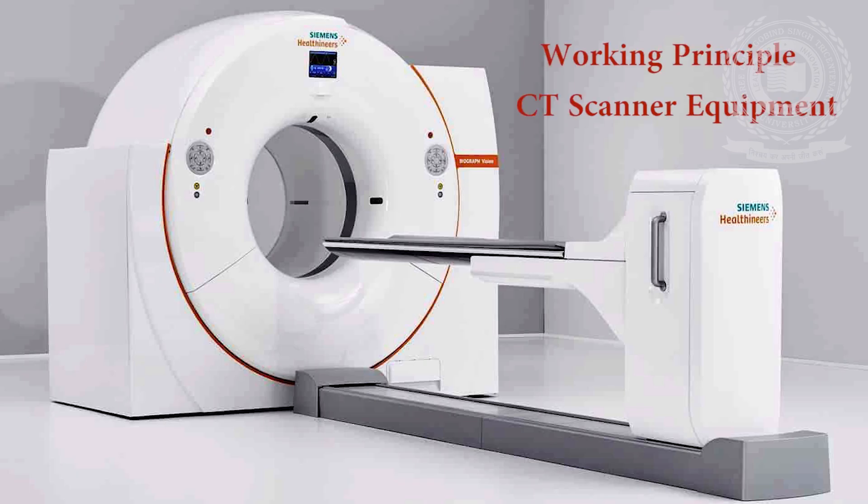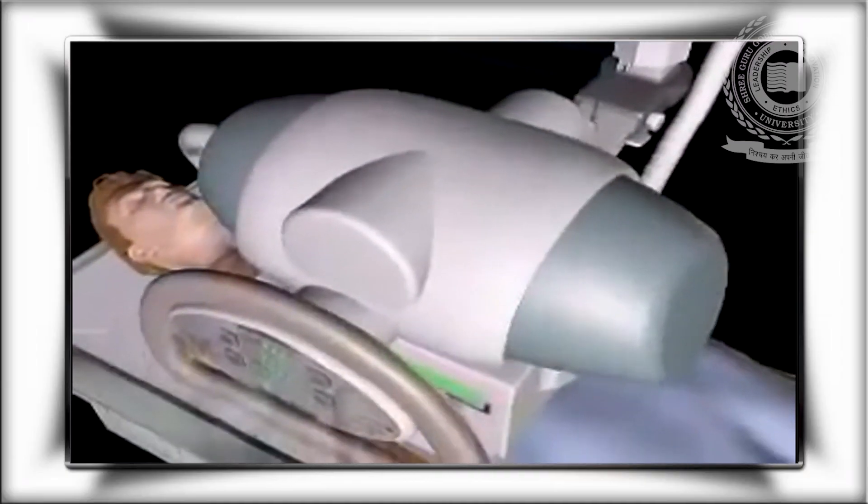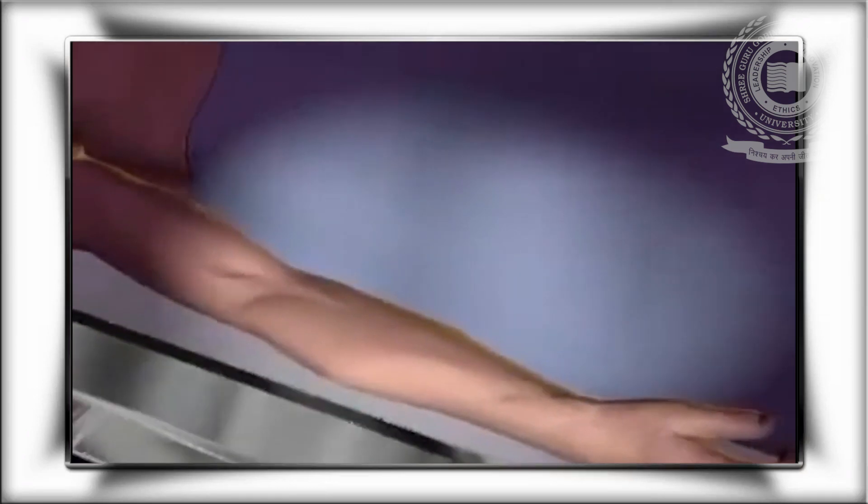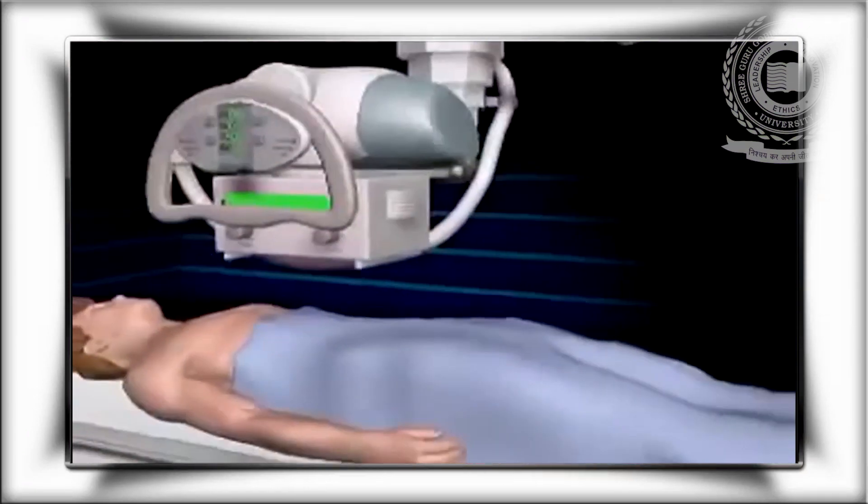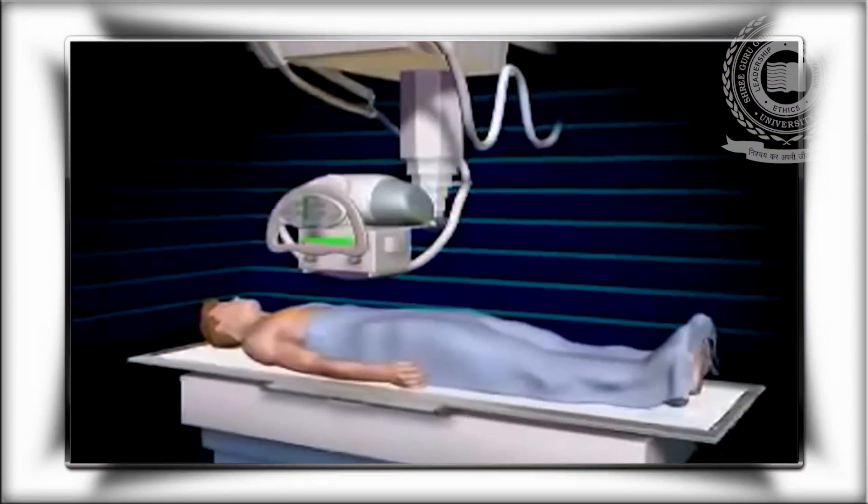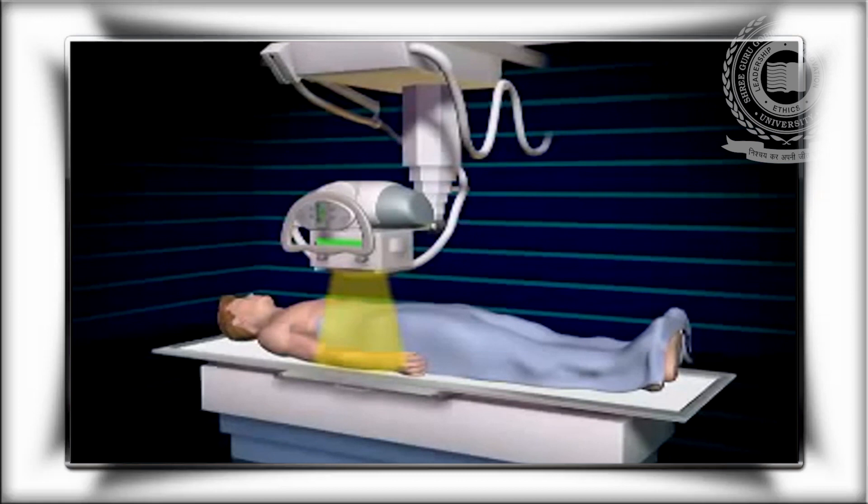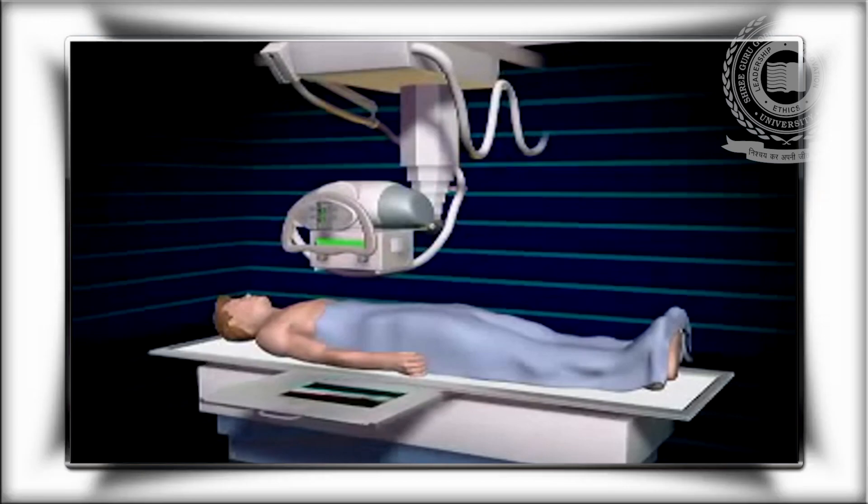Now the working principle of CT scanner. In general radiography or conventional radiography, we acquire 2D X-ray images by exposing the patient from one direction in which the X-ray tube is mounted over the radiographic table and remains stationary during exposure. Also, the patient is sandwiched between the X-ray tube and cassette or image plate.